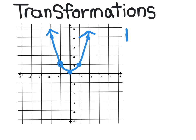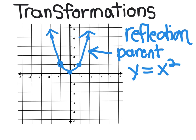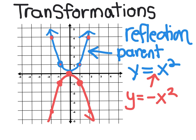Another common transformation is a reflection. Starting with the parent function y equals x squared, changing the number in front of x squared to negative takes all the positive y-values and makes them negative. Zero stays zero, positive 1 becomes negative 1, positive 4 becomes negative 4, and the graph is turned upside down.